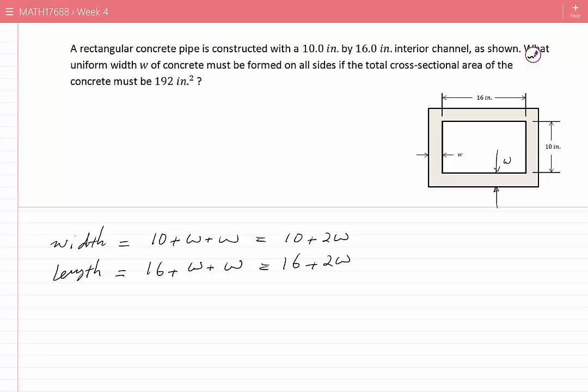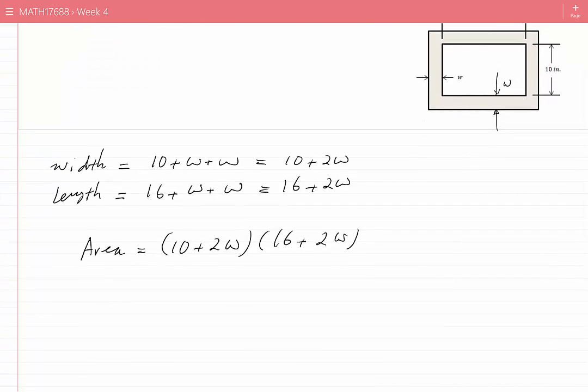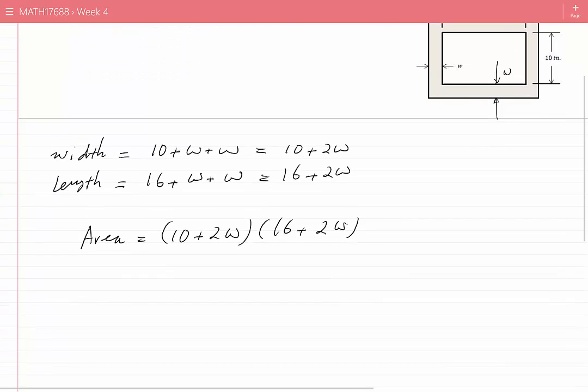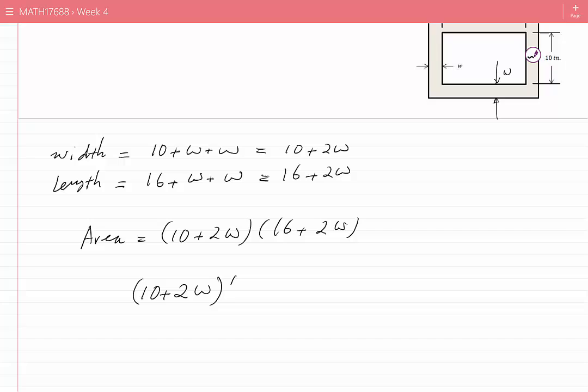Now the area of the cross-section is length times width, which would be (10 plus 2W) times (16 plus 2W). We would like to know for what value of W this would equal 192. If the area is 192, then (10 plus 2W) times (16 plus 2W) should be 192.